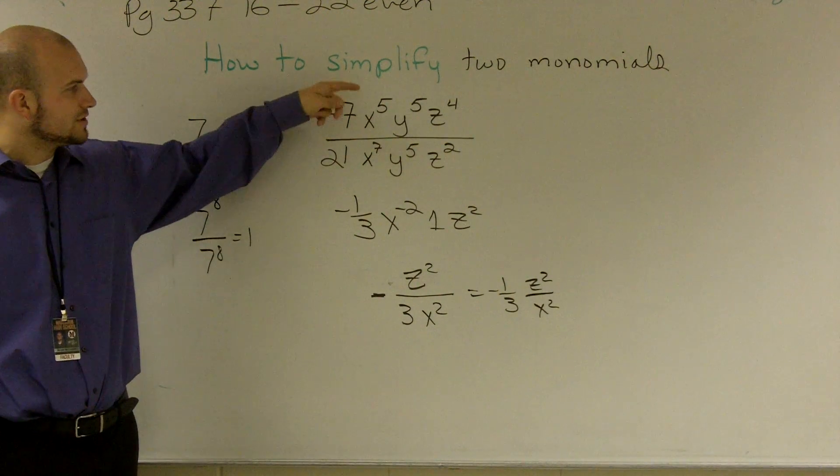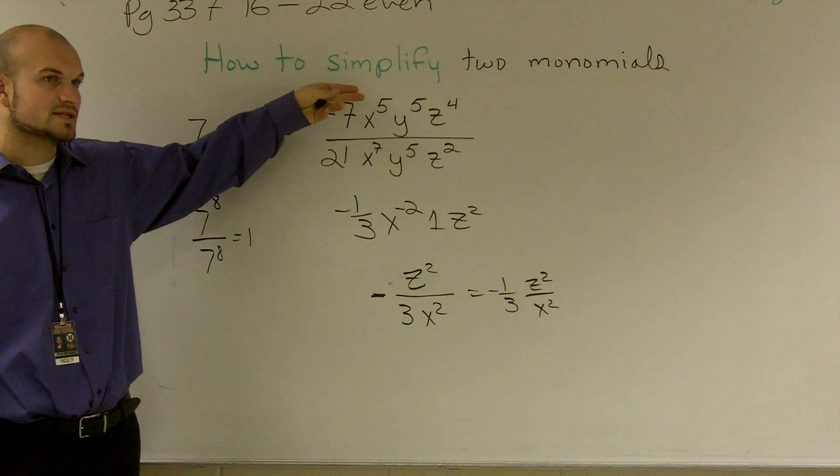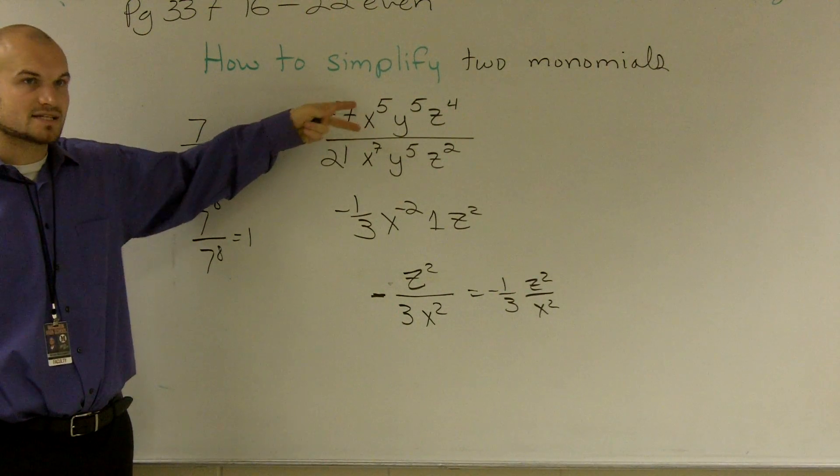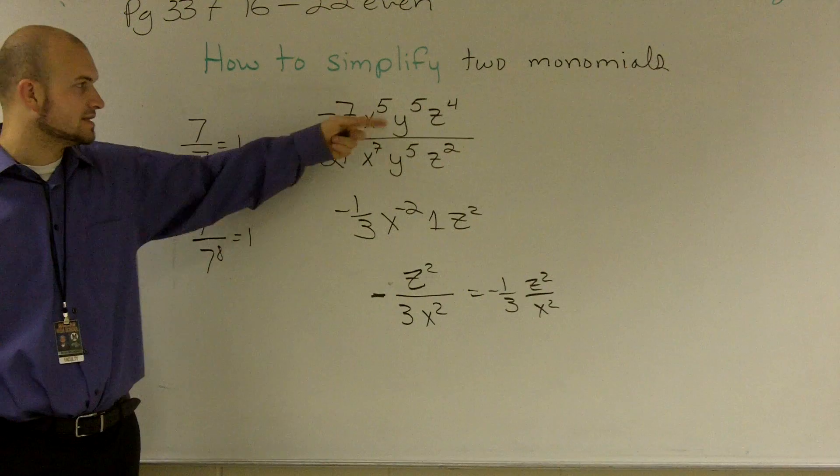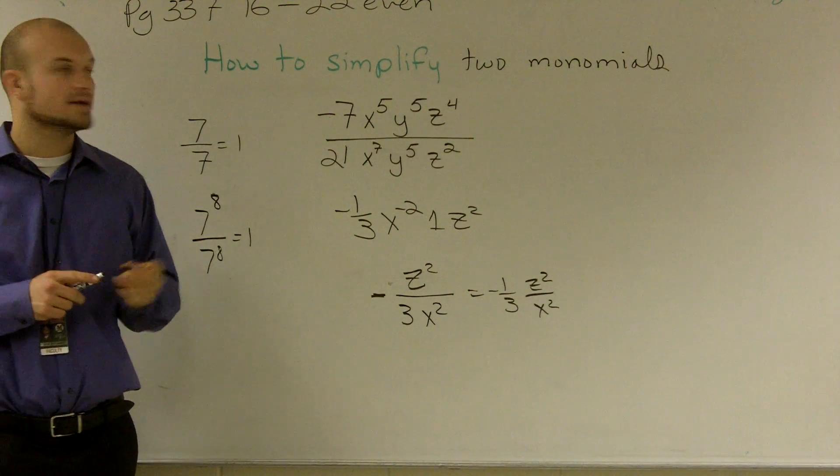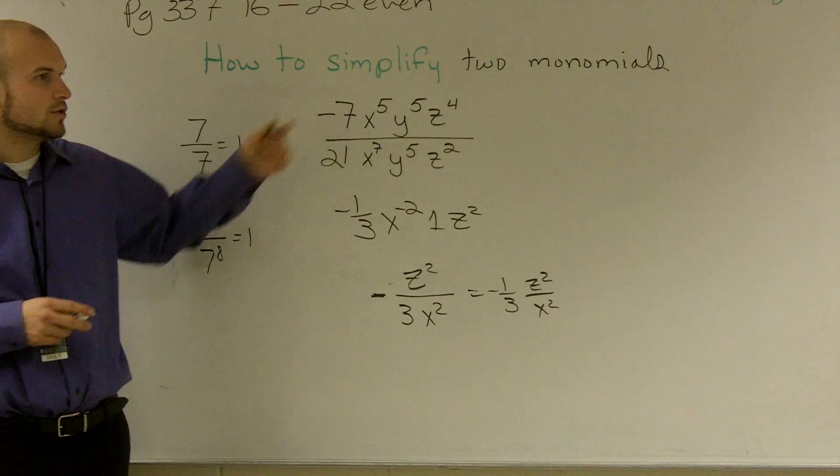But the main important thing to make sure you're doing is you can only subtract exponents from the same bases. The x's from the x's, the y's from the y's, and the z's from the z's. So that's how you simplify two monomials when dividing.